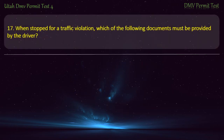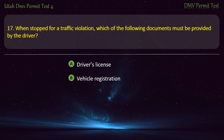Question 17. When stopped for a traffic violation, which of the following documents must be provided by the driver? Driver's license; Vehicle registration; Proof of insurance; or All of the above? Answer: All of the above.